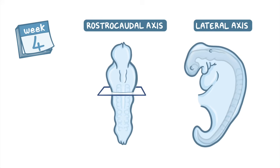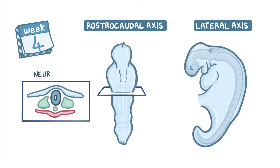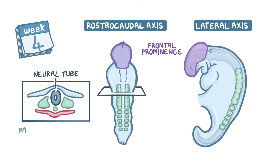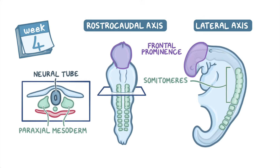At the head end of this shrimp-like creature, the neural tube expands greatly, forming the primitive forebrain, which produces a bulge known as the frontal prominence. Lateral to the neural tube is the para-axial mesoderm, which partially segments rostrally to form somitomeres, and fully segments caudally to form somites, the first in the series being the occipital somites.